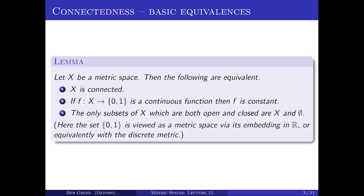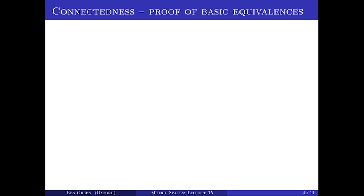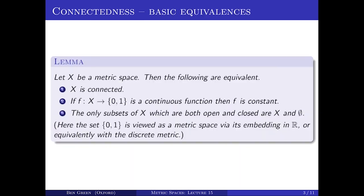To clarify, the set {0,1} here can be viewed in either of two equivalent ways: either as a subset of the reals or just as a set of two elements with the discrete metric — they're actually the same metric. Let's prove that those three properties 1, 2, and 3 are equivalent.